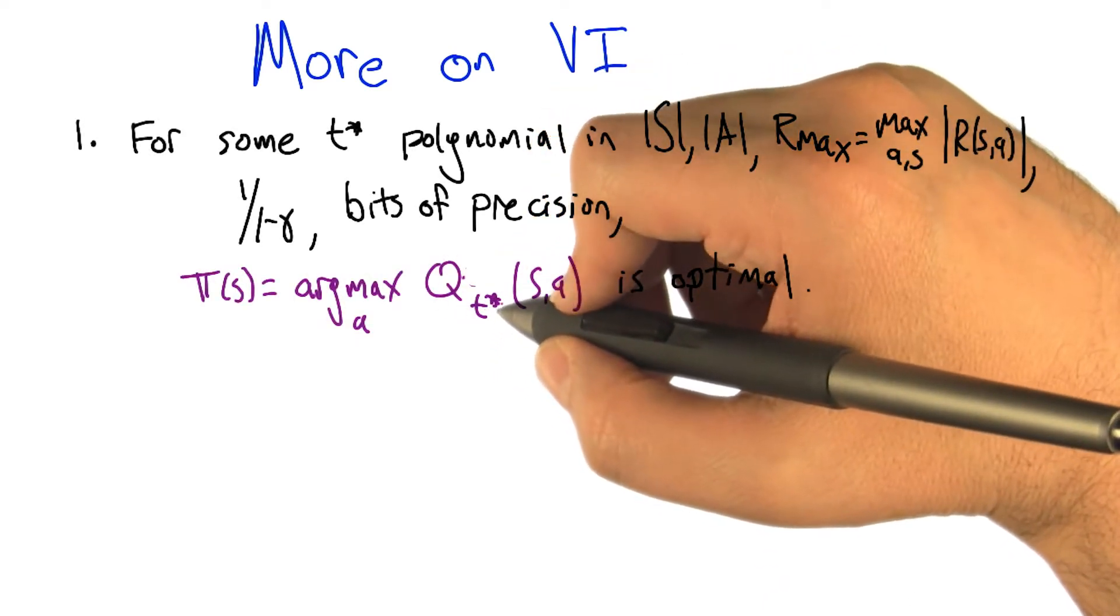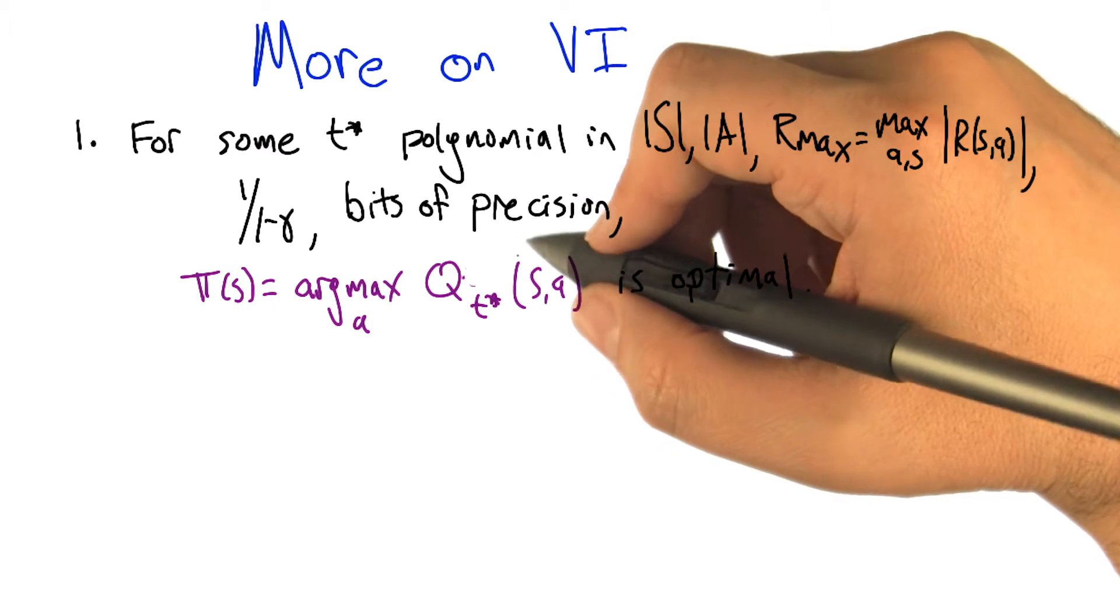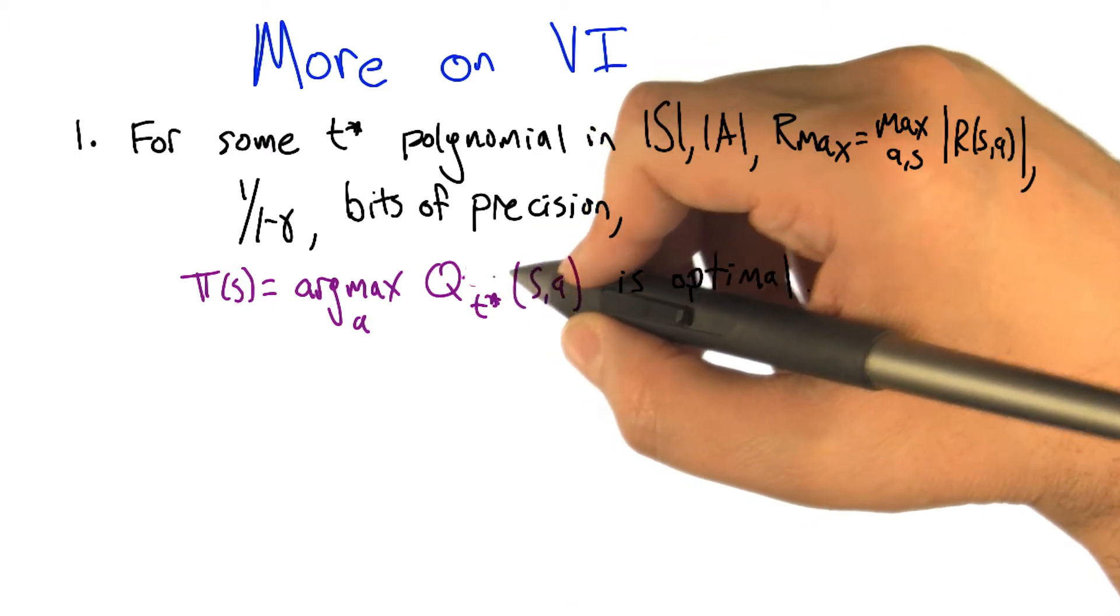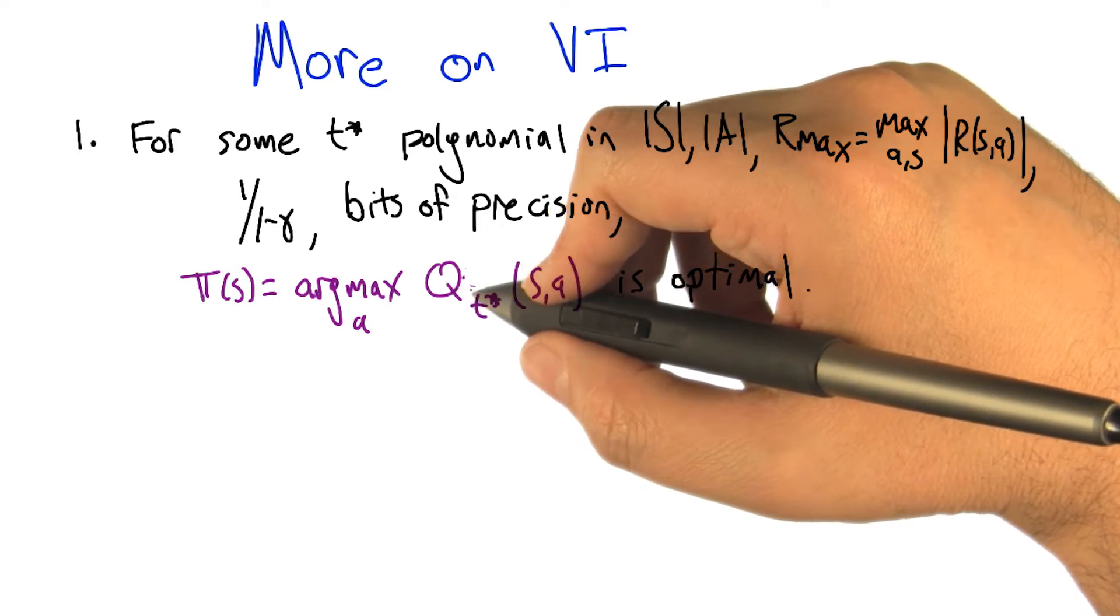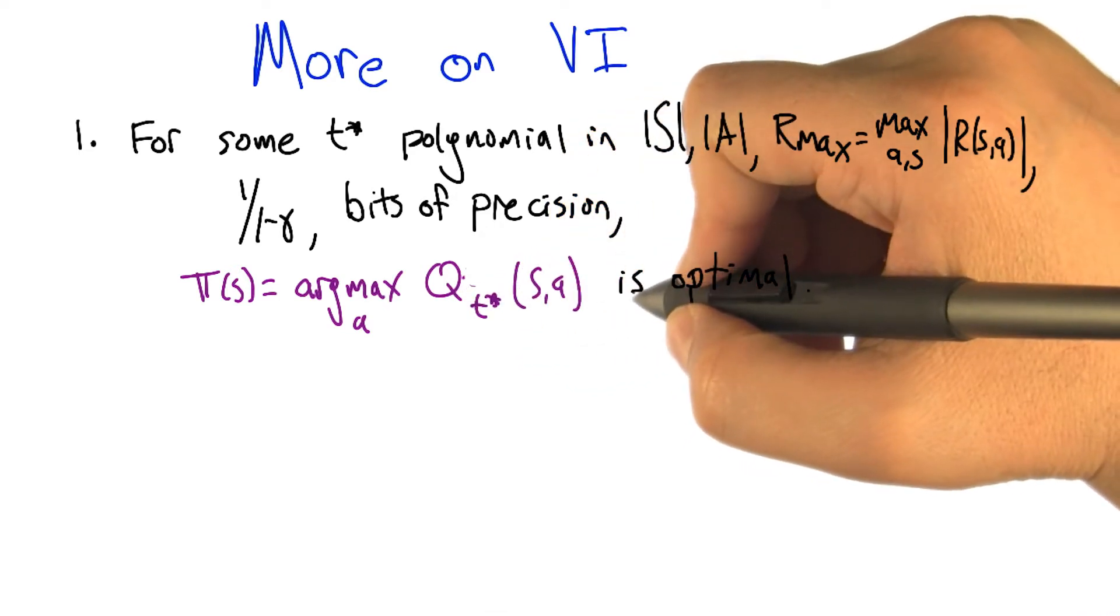If you think about q_t*, that's the q function we get if we run value iteration for t* iterations. We know that it converges in the limit - that q_t eventually goes to q*.